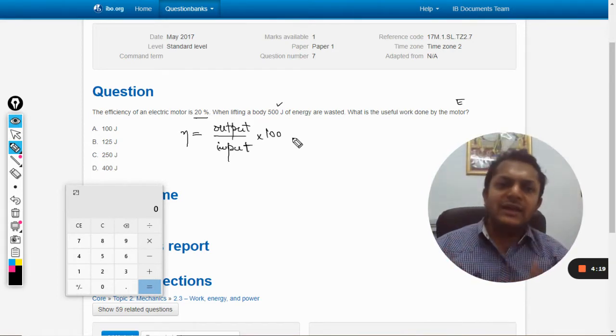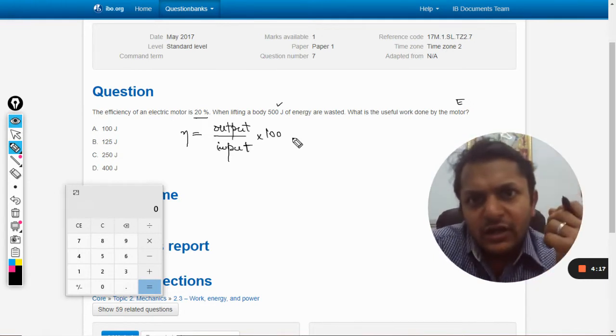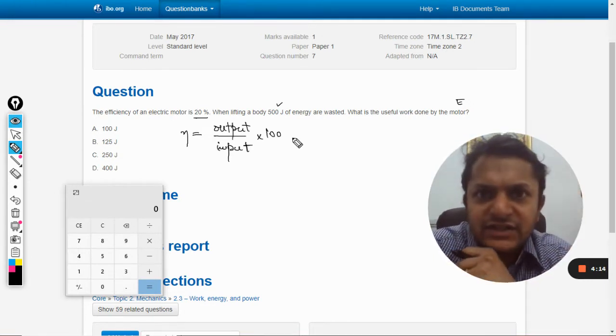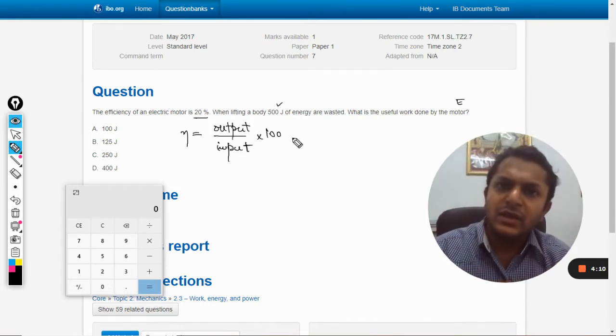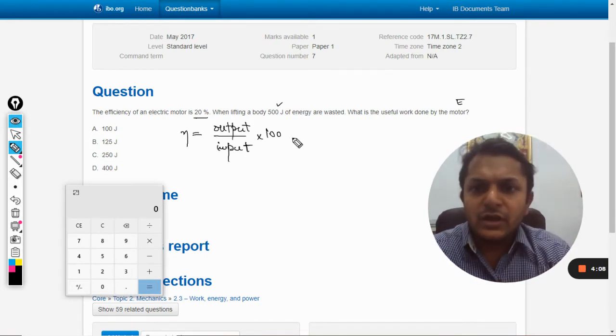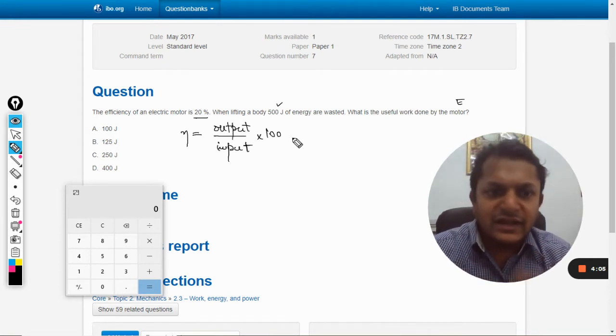That depends upon the case that we are doing, but overall a general formula for the efficiency is the output divided by input into 100, whatever it is. So I have written just like that.